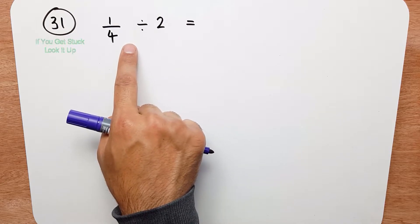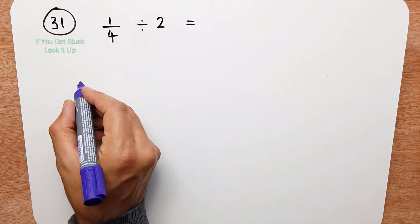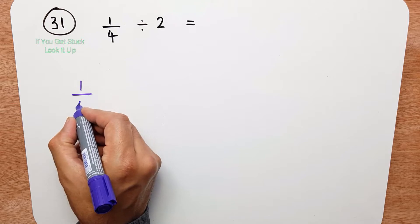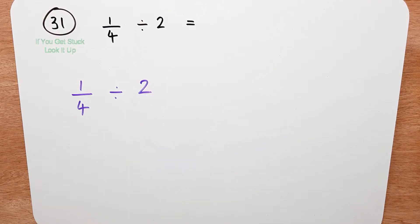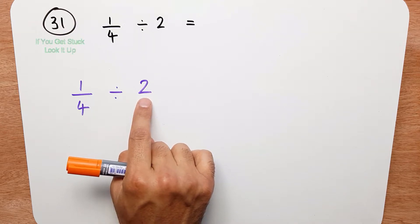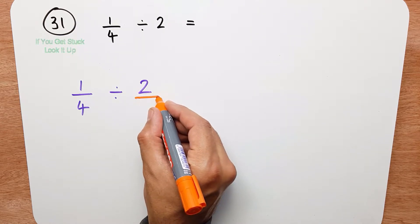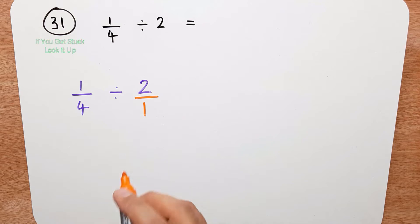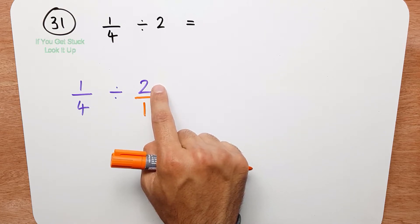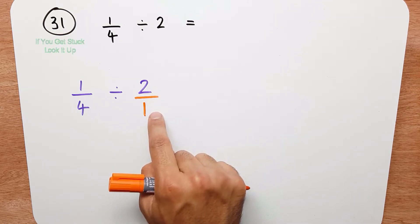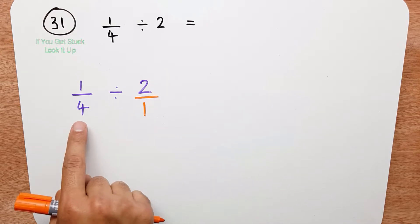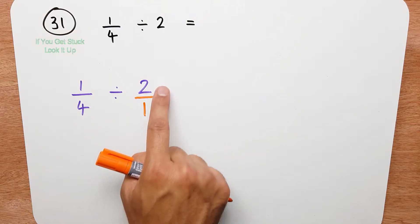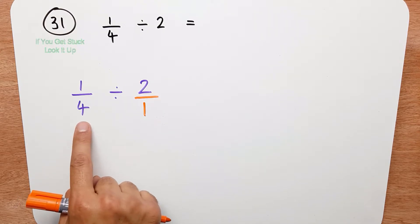Now what I like to do with this sort of question, let me write this down: 1 quarter divided by 2. I always like to write the whole number divided by 1. Now this hasn't changed this value because 2 divided by 1 is still 2, or 2 ones is 2. Now I have a quarter divided by 2 over 1. I have two fractions.